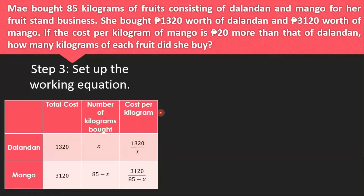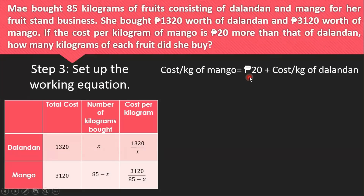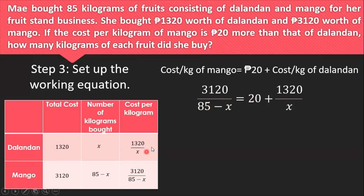Proceeding to step 3, we set up the working equation. The problem states that the cost per kilogram of mango is 20 pesos more than that of the dalandan. Using that statement, our equation is: 3,120 over (85 minus x) equals 20 plus 1,320 over x. On the right-hand side, we have two expressions. To make it easier to solve, we combine them into a single expression. Since 20 can be written as 20 over 1, the LCD of 1 and x is x, giving us (20x + 1,320) over x.